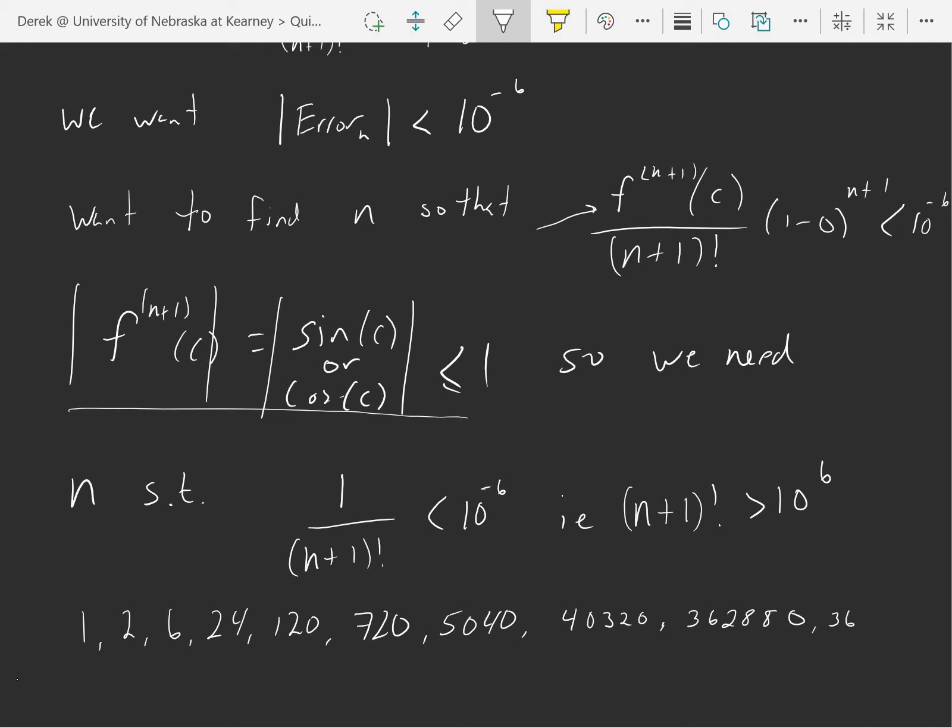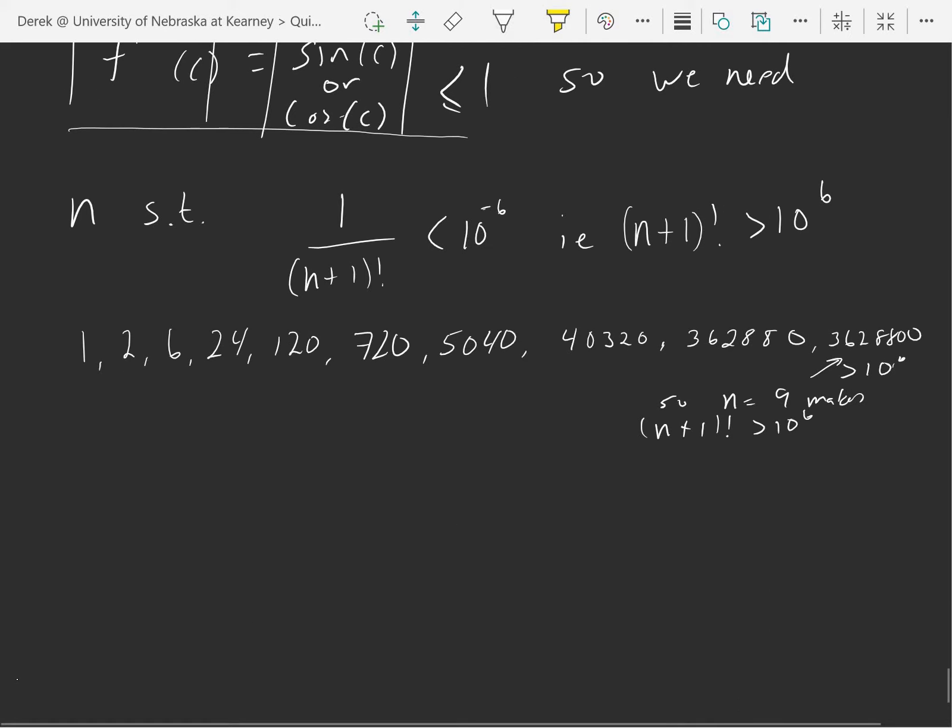Which is going to be 3,628,800. This guy is bigger than 10 to the 6th, so n equals 9 makes n plus 1 factorial bigger than 10 to the 6th.